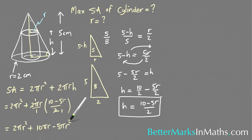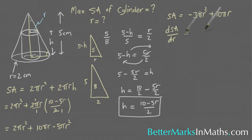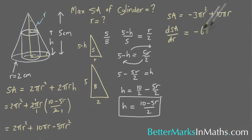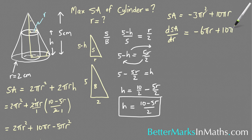From here, deriving that, so dSA/dr, deriving this you get -6πr plus 10πr plus 10π.